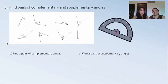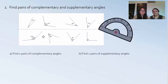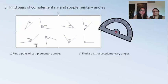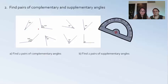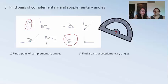Now that Yadira explained what complementary and supplementary angles are, let's try to find a couple of pairs. Let's start with finding complementary angles. As Yadira said, complementary angles are two angles that add up to 90 degrees. For instance, this 20-degree angle plus this 70-degree angle is a complementary pair because they equal 90.